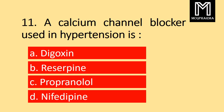A calcium channel blocker used in hypertension is: Option A Digoxin, B Reserpine, C Propranolol, D Nifedipine. Correct answer: Option D Nifedipine.